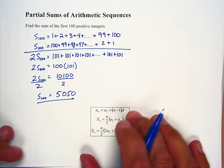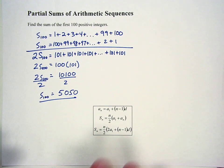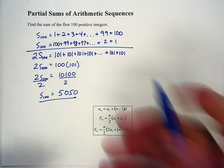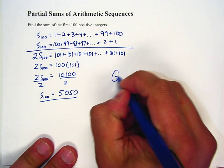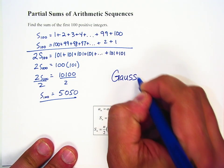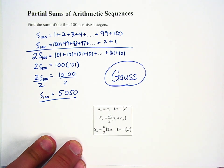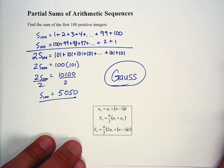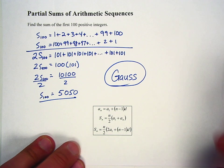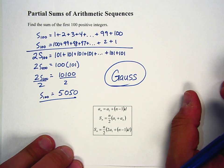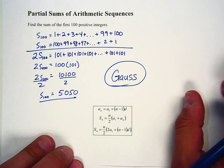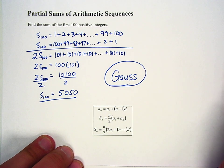Needless to say, this man — or boy at the time — was a genius. His name was Gauss, G-A-U-S-S. He later went on to do Gaussian elimination and came up with many different formulas that were very important mathematically.